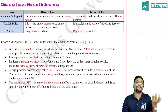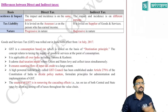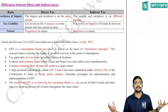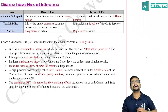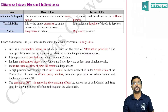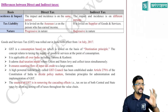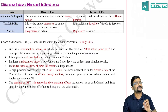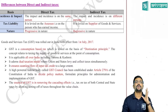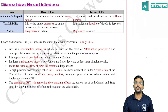Regarding nature: direct tax is progressive in nature — the higher the income, you will end up paying higher tax. If you don't have any income, you will not pay any tax. Whereas indirect tax is always regressive in nature — irrespective of your income, if you are buying any goods on which GST is applicable, you have to pay it.